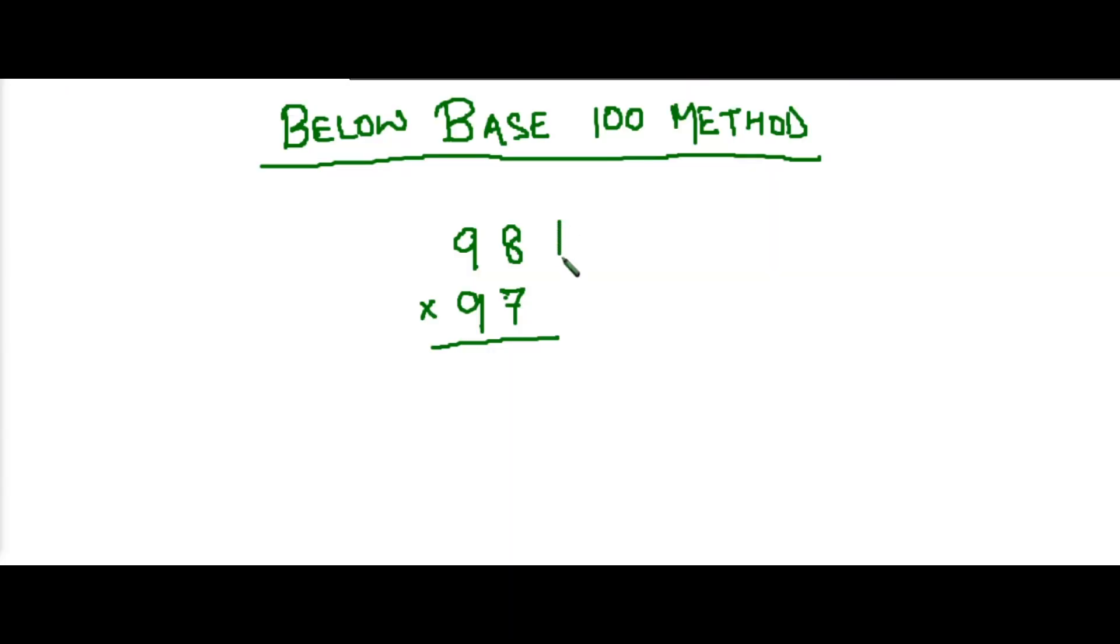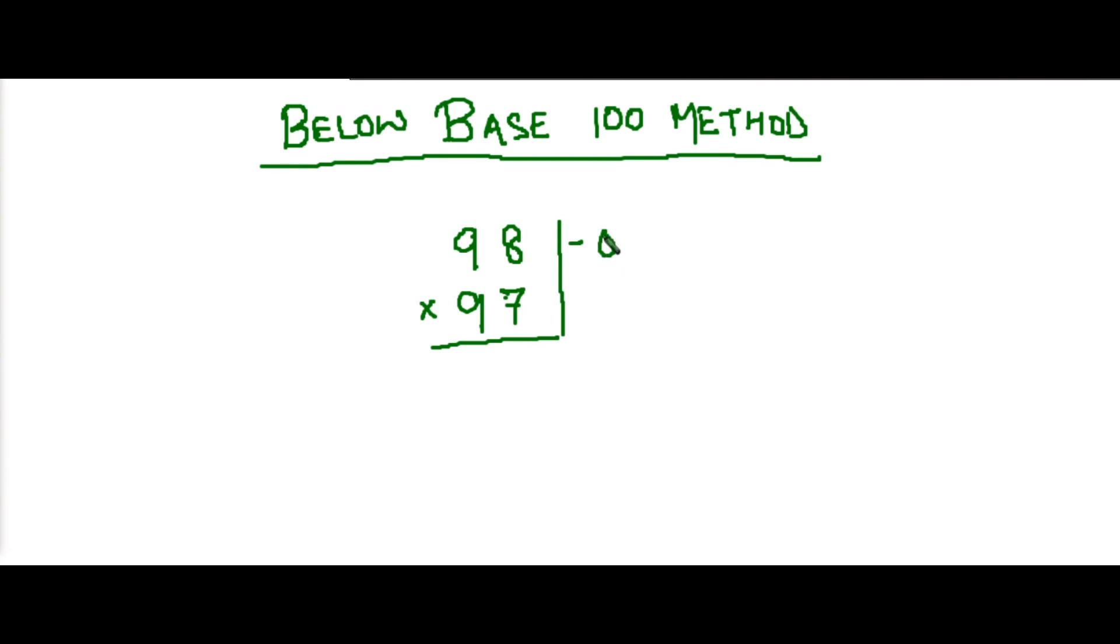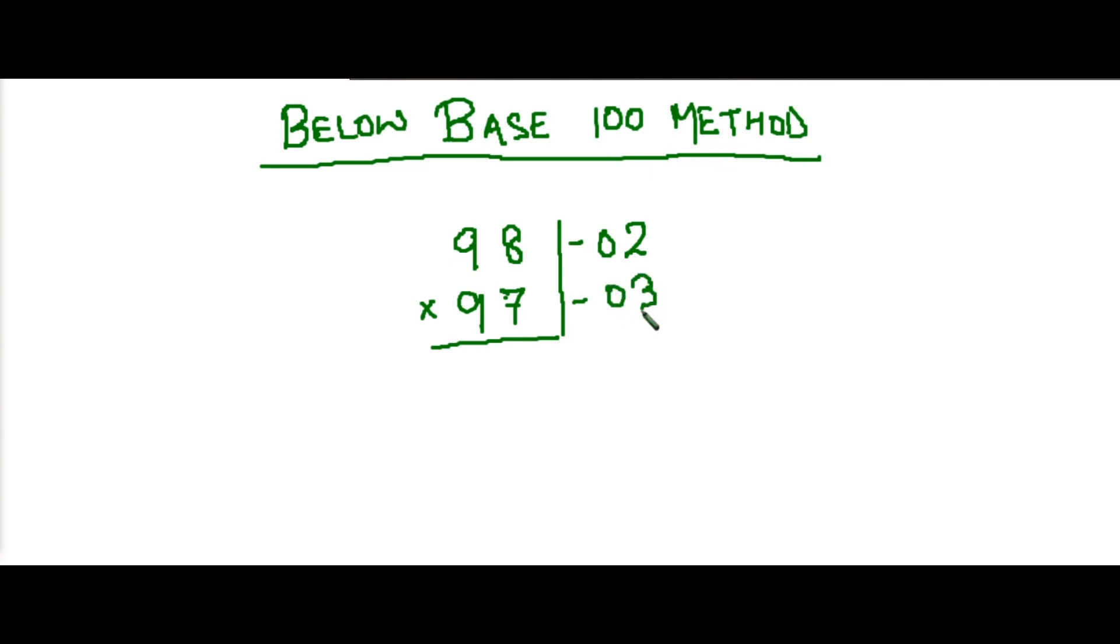98 is two less than hundred, right? So we'll draw a line like this, and in front of 98 we will write minus 02, because 98 is two less than hundred. We wrote 02 because in hundred we have two zeros. Similarly, beside 97 we will write minus 03 because 97 is three less than hundred.